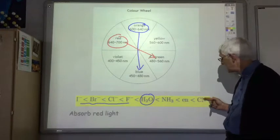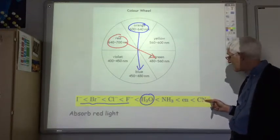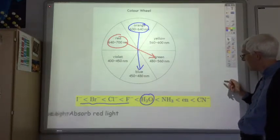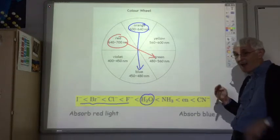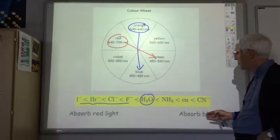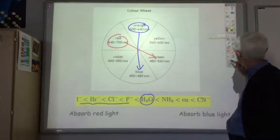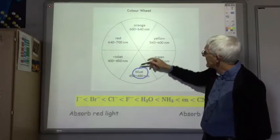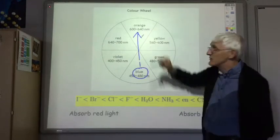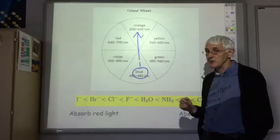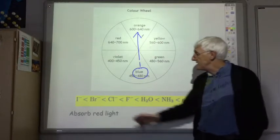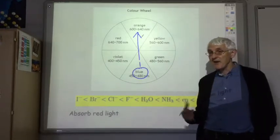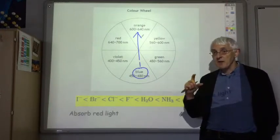According to the spectrochemical series, the cyanide ion is the one that splits the d orbitals by the greatest amount. So the cyanide ion would cause the complex to absorb high-energy, low-wavelength light — which would be blue — and in that case the complex would appear orange, like the potassium dichromate shown in the first slide. You'll be pleased to know you don't have to learn this spectrochemical series; you just need to be aware that different ligands will split the d orbitals by different amounts.